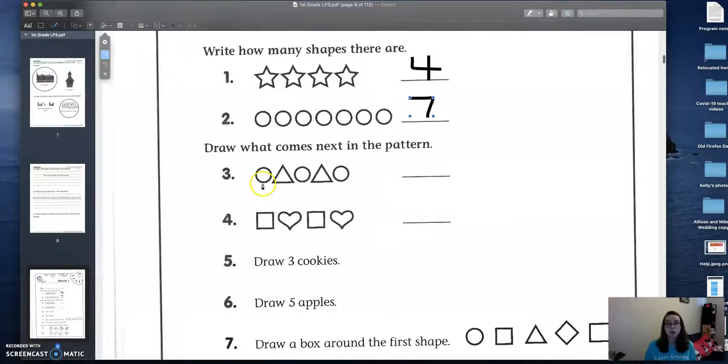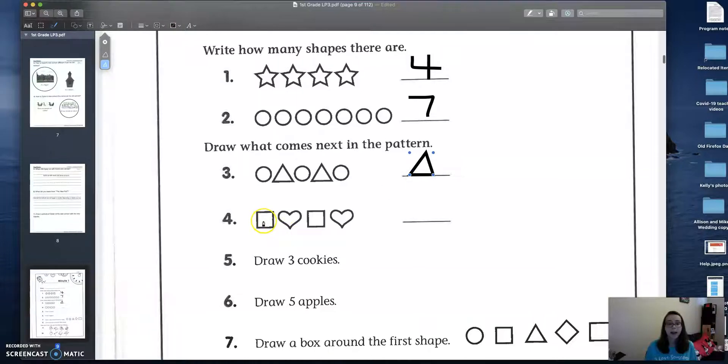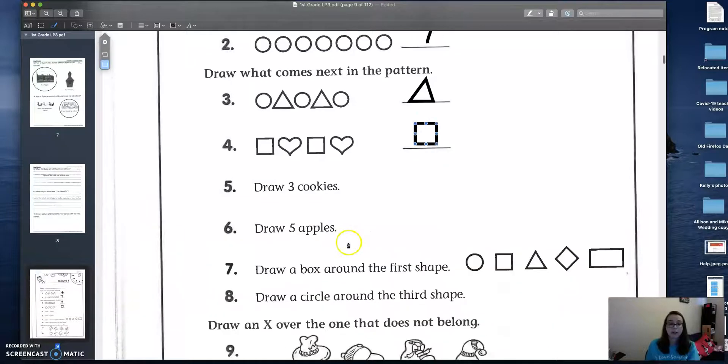So this is a pattern. Circle, triangle, circle, triangle, circle. What's going to come next? Good, triangle. And this is also a pattern. Square, heart, square, heart. What's next? Square. Very good.